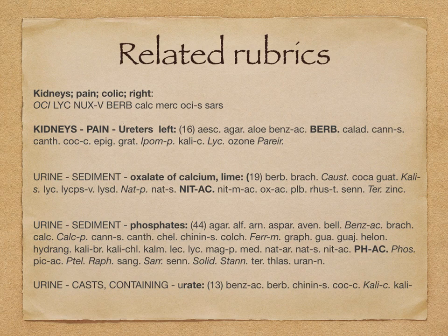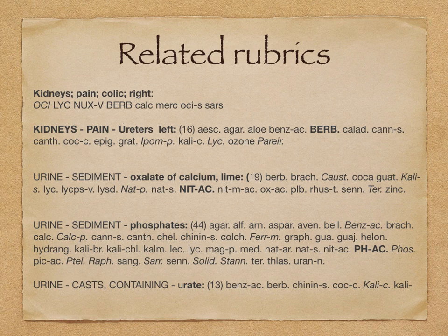Then the rubric: Urine, sediment, oxalate of lime. Suppose the urine examination contains calcium oxalate crystals — we take this rubric. Nitric acid is a very important remedy; usually we prescribe it in lower potency and it will dissolve the calcium oxalate stone. And if the urine examination shows phosphate stones, then the most important remedy is Acid phosphoricum. The rubric is: Urine, sediment, phosphates of lime.